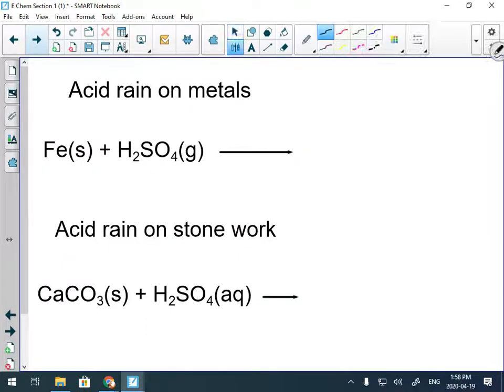First off, acid rain affects stuff that we build out of metal. Iron goes through a single replacement reaction with different types of acids and you get something that looks like this in a roundabout way to keep things as simple as possible. See how the iron just kicked out the hydrogen? You get rust.